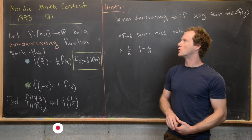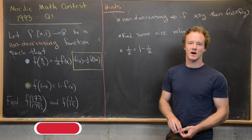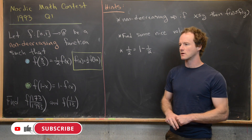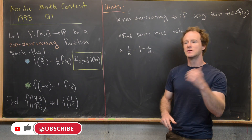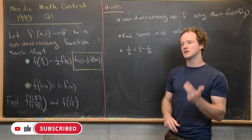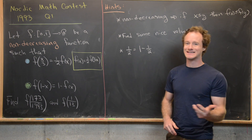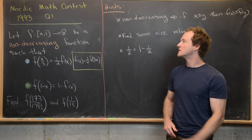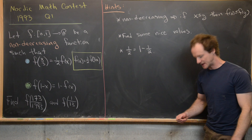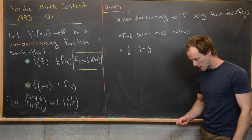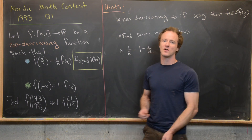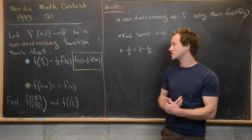Here we're going to look at a problem from the Nordic Math Contest — a mathematical competition between Finland, Iceland, Norway, and Denmark. This is from the 1993 edition, question one, and it has to do with a certain functional equation.